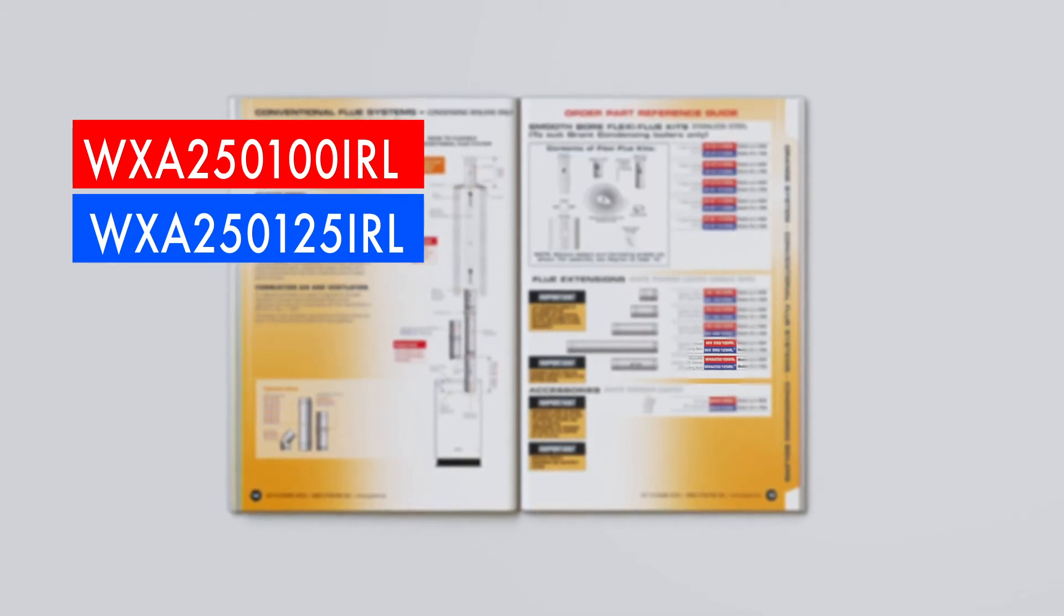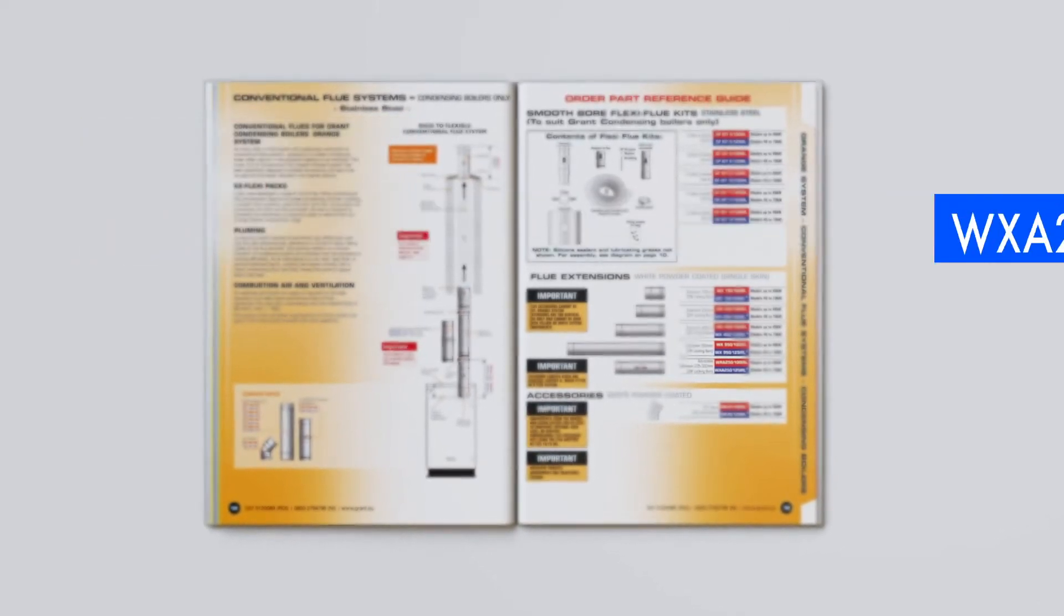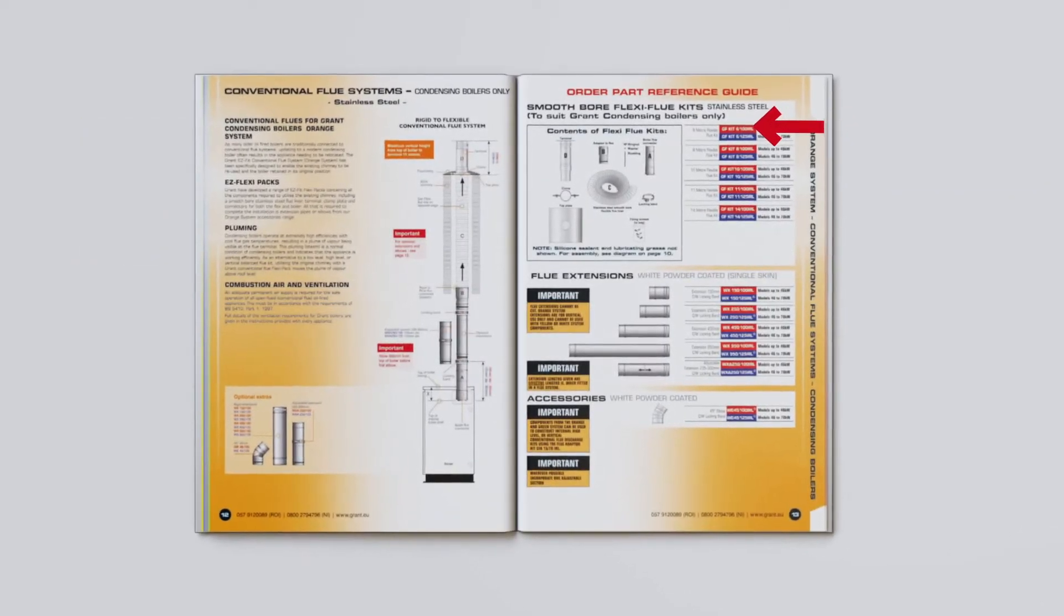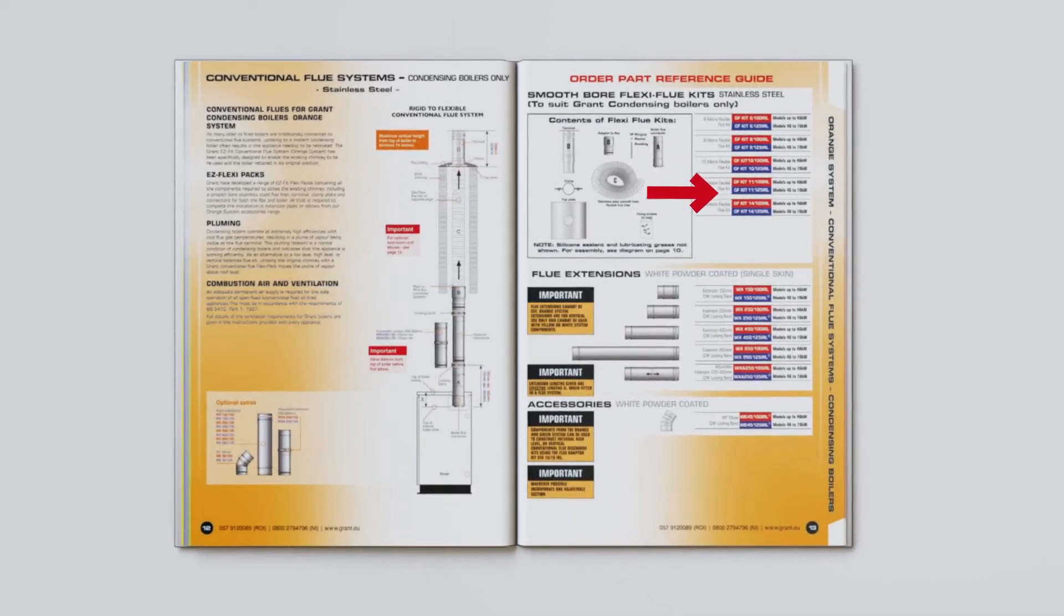The difference in the parts is the diameter of the flue system to accommodate the higher outputs. The red codes go up to 46kW on the orange system and the blue codes for 46kW and above.